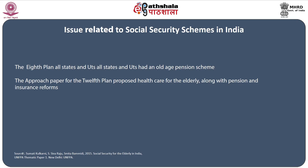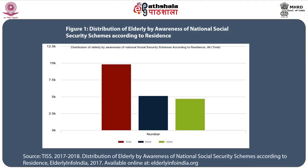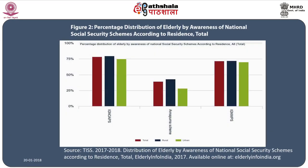The approach paper for the 12th five-year plan proposed health care for the elderly along with pension and insurance reforms to enhance their quality of life. Based on the analysis of various programs and schemes, there is a huge gap in terms of awareness, knowledge, attitudes and final utilization by the elderly and caregivers in India. We need to bridge this gap so that every needy elderly person can benefit from these social security measures.